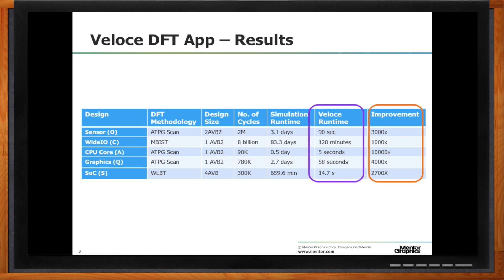These are still relatively small test cases internally, so we wanted to run them quickly and verify. We are comparing simulation runtime — the traditional way of verifying DFT vectors — to the runtime on Veloce with the DFT application. The acceleration factor improvement is in the thousands to 10,000x range. It varies from design to design, but we have seen tremendous improvement.